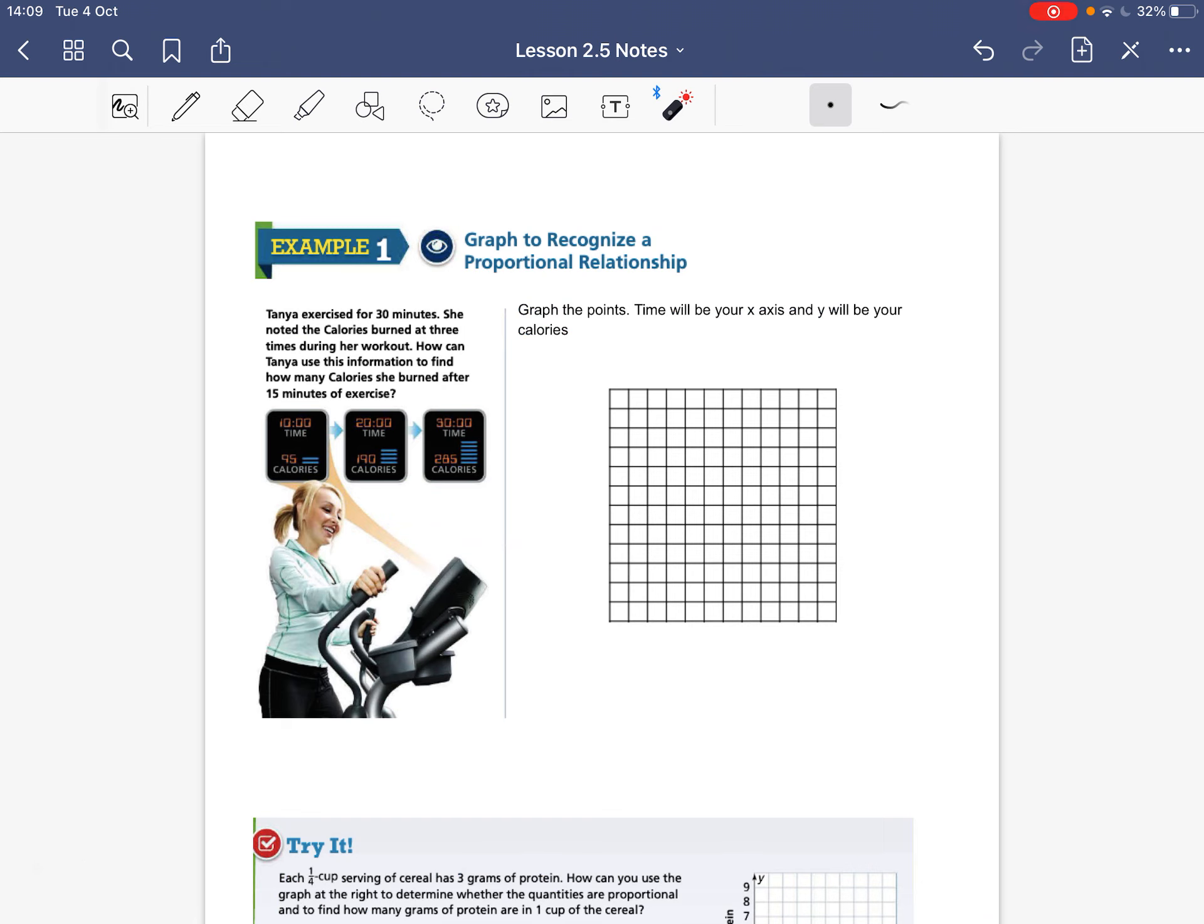All right. So let's go ahead and look at example 1. You might have trouble seeing this in the handout. This is 10 minutes. This is 20 minutes. And this is 30 minutes. And that's how many calories she burned. So Tanya exercised for 30 minutes. She noted that the calories burned at the 3 times during her workout. How can Tanya use the information to find how many calories she burned after 15 minutes of exercise? So we need to draw a graph here. So first of all, let's draw our x and y coordinates.